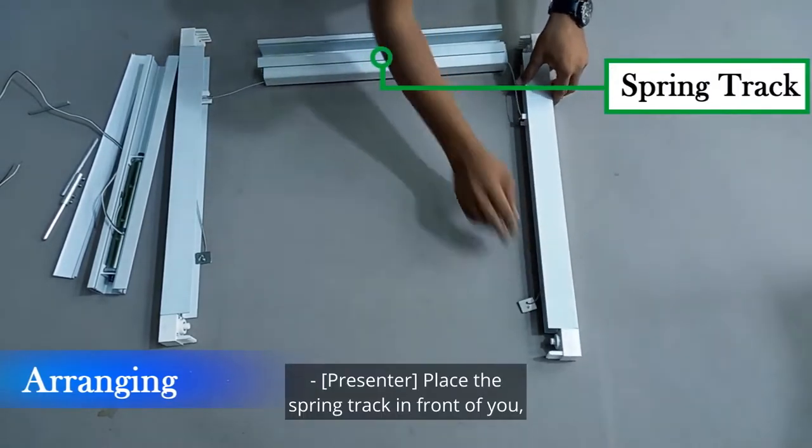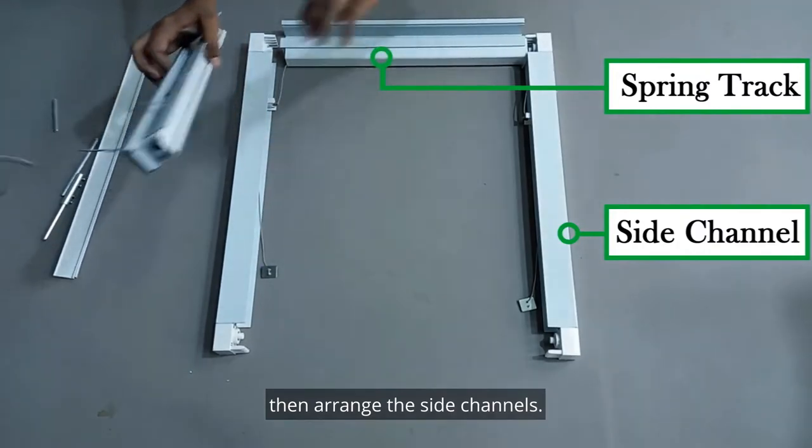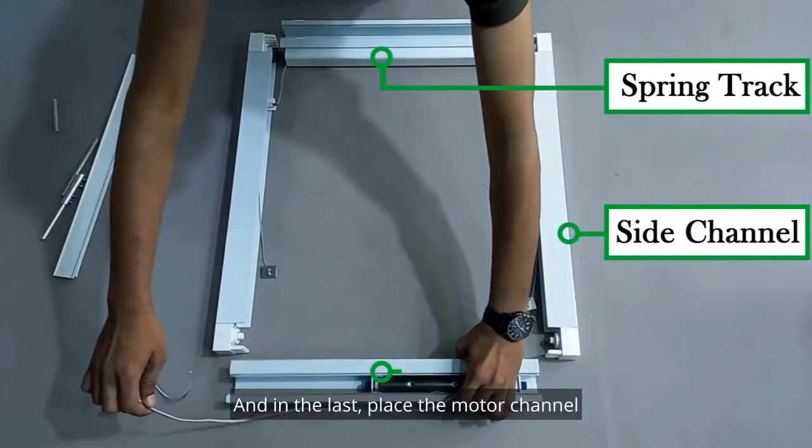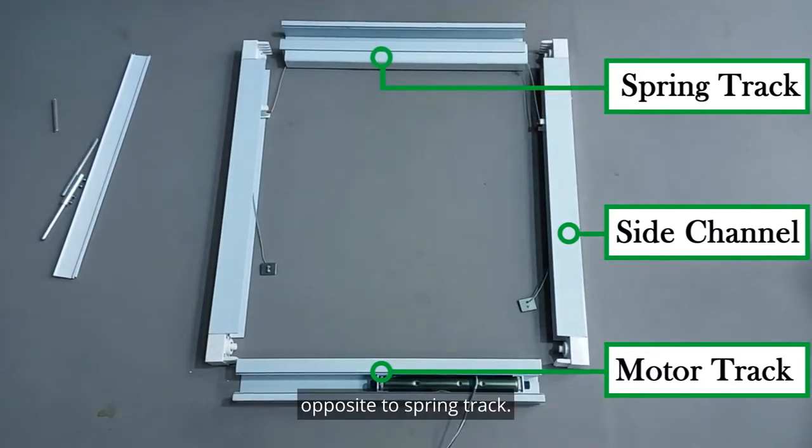Place the spring track in front of you, then arrange the side channels. And in the last, place the motor channel opposite to spring track.